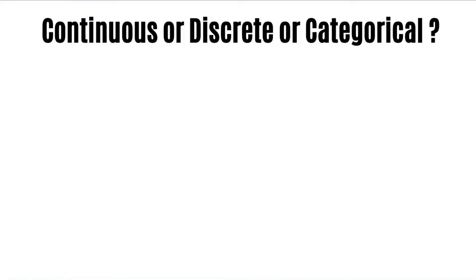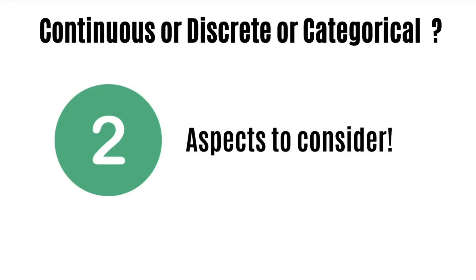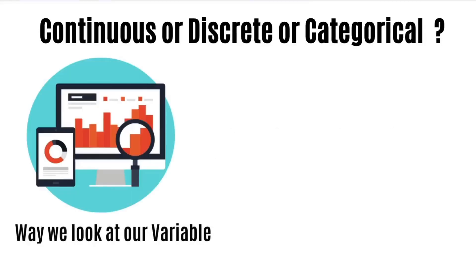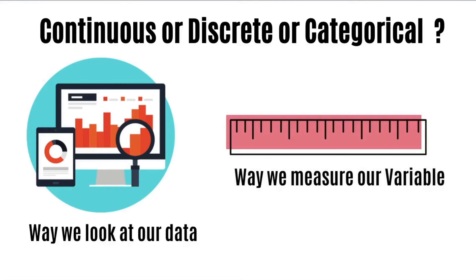To distinguish between categorical, discrete, and continuous variables, we have to consider two key aspects: first, the way we think about or conceptualize our variable, and second, the way we actually measure our variable.